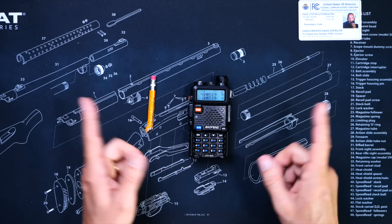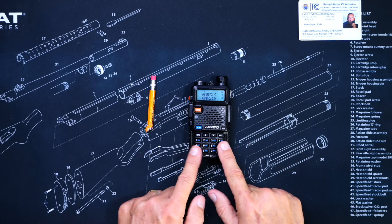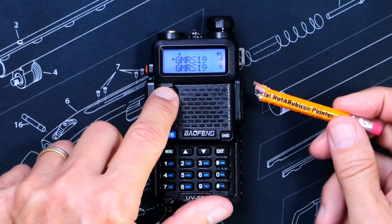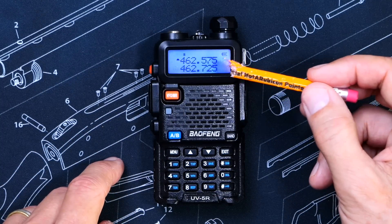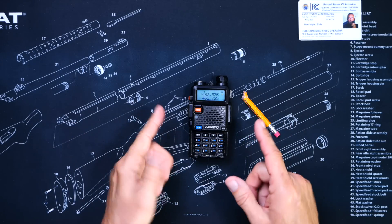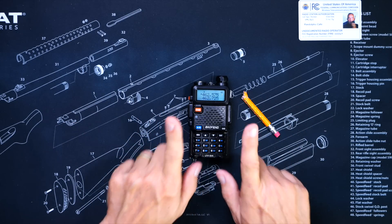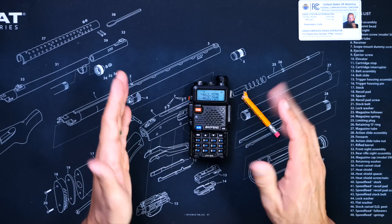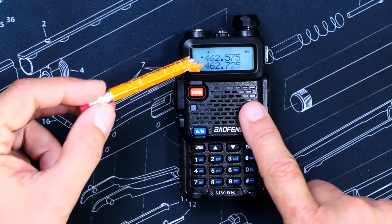it will be locked, and it will only transmit on GMRS channels. Notice that I said channels, and not frequencies. And I said that because a GMRS radio, any GMRS radio, will only transmit in channel mode.